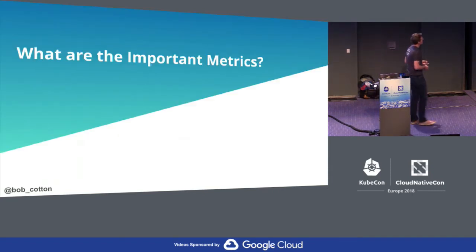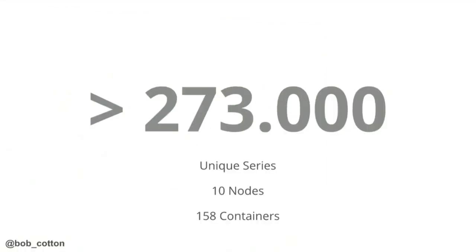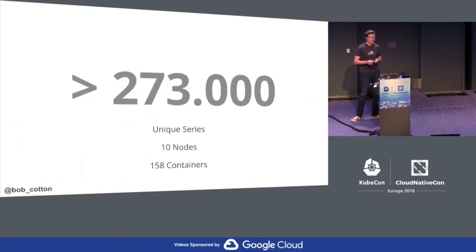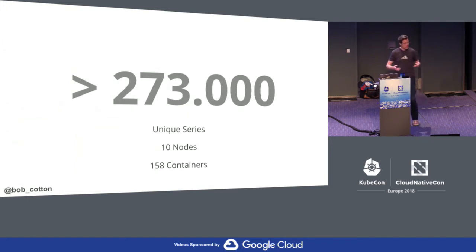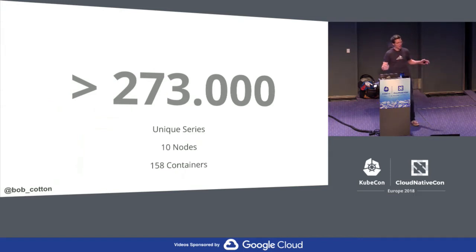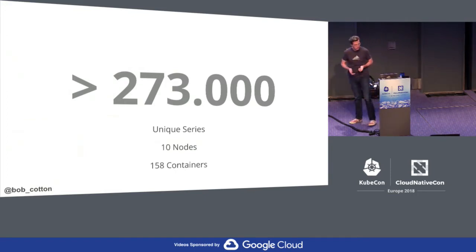So what are the important metrics in your cluster? We have a modest production cluster at Fresh Tracks, and there are more than 273,000 unique series that come off of this cluster — an amazing amount of metrics. The level of visibility you get from running Kubernetes is fantastic. But when you install Prometheus and Grafana and open Grafana for the first time, what are you greeted with? Nothing. Blank dashboards, nothing. And then you have to start assembling things together to figure out what the important things are.